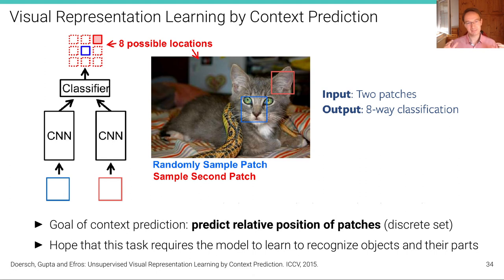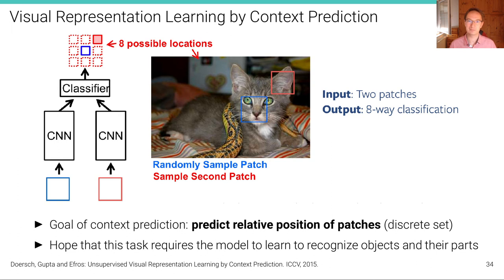In the following slides we look at several pretext tasks proposed in the literature. Admittedly, they are all quite hand-engineered — there is no theory, at least not yet, underlying these pretext tasks, only empirical evidence that they work well. Empirically, when we copy the weights and apply them to some downstream task with fine-tuning of some or all layers, we can get away with less labeled data for the downstream task.